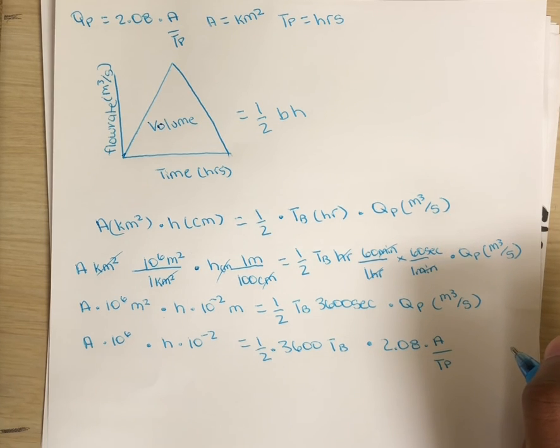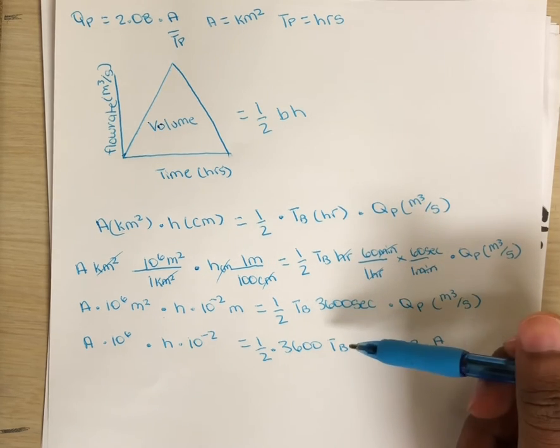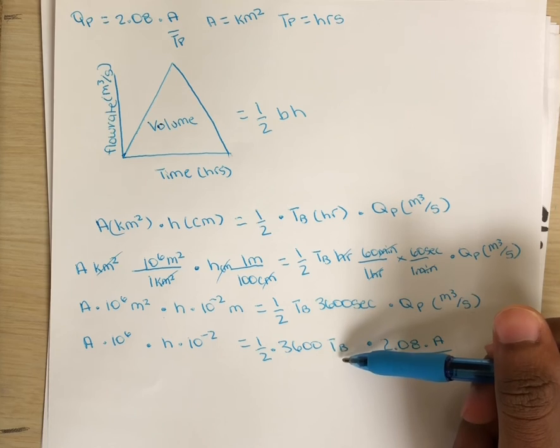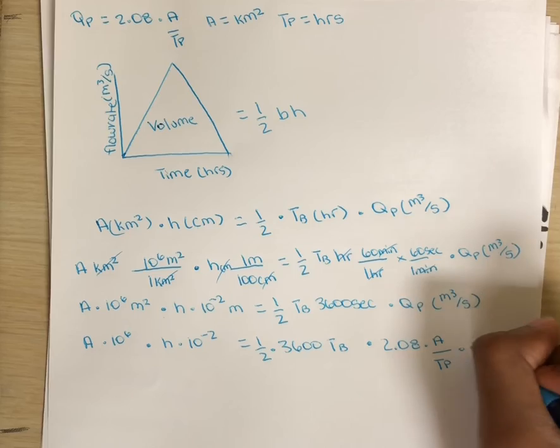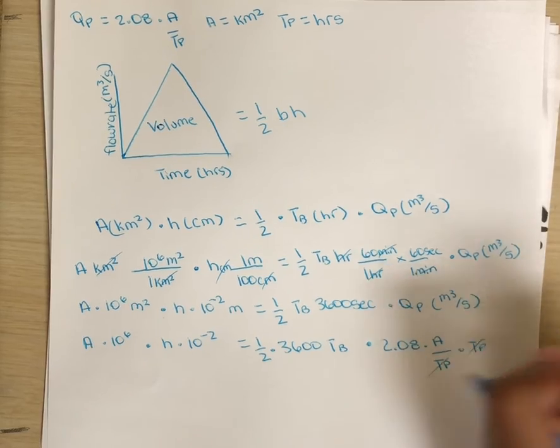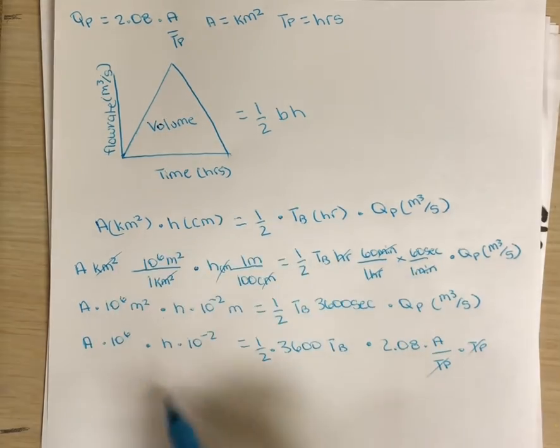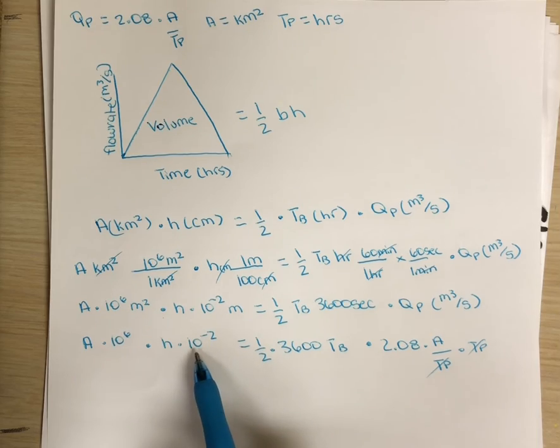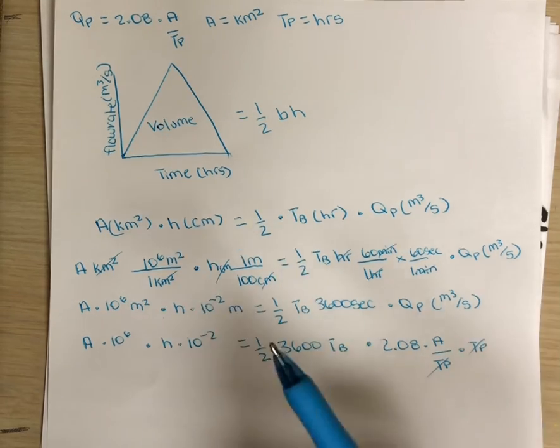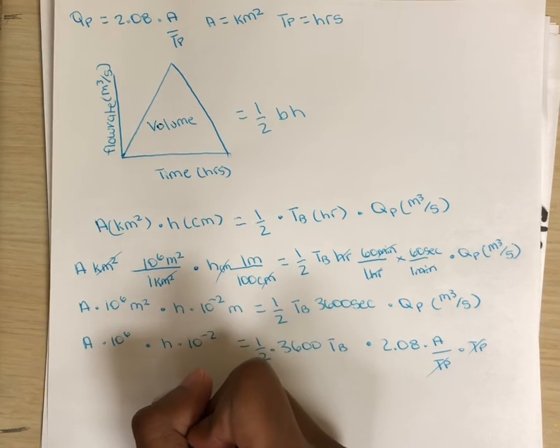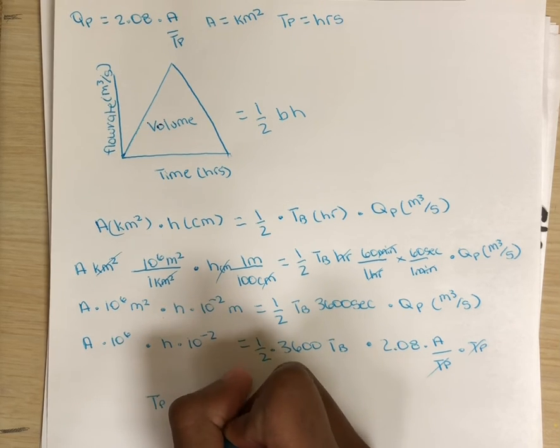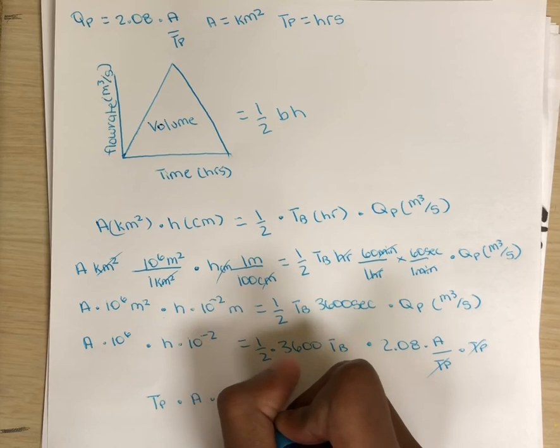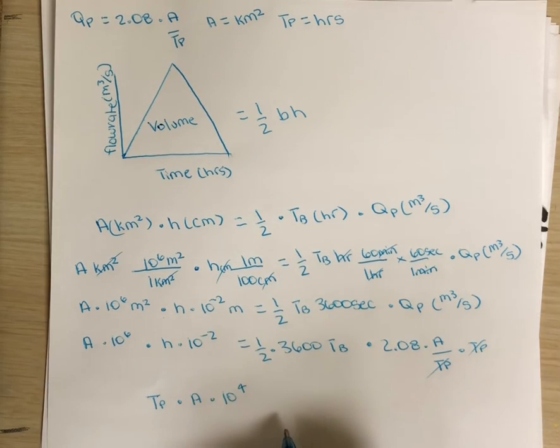Now using algebra, let's solve for the time duration, tb. So let's multiply tp on both sides, giving us, and combining 10 to the sixth and 10 to the negative 2, we have tb multiplied by the area times 10 to the fourth.